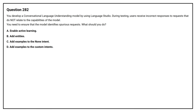Option number 282. You develop a conversational language understanding model using Language Studio. During testing, users receive incorrect responses to requests that do not relate to the capabilities of the model. You need to ensure that the model identifies spurious requests. What should you do? Option A: Enable active learning. Option B: Add entities. Option C: Add examples to the None intent. Option D: Add examples to the custom intents. The correct answer is Option C: Add examples to the None intent.